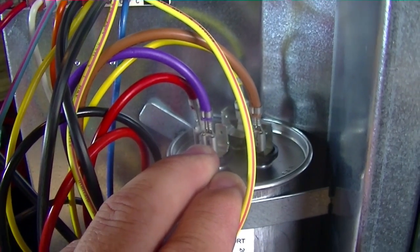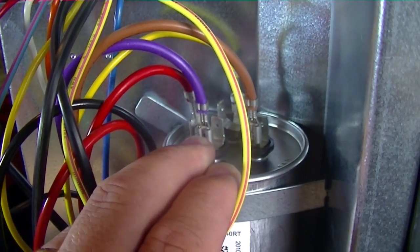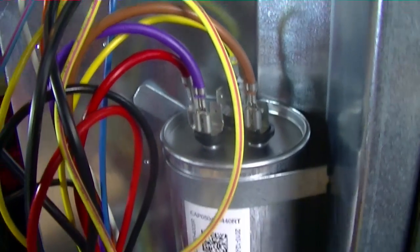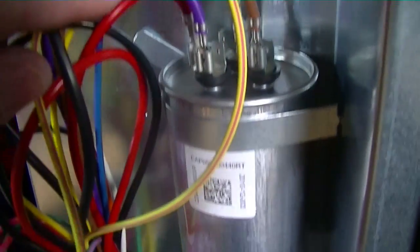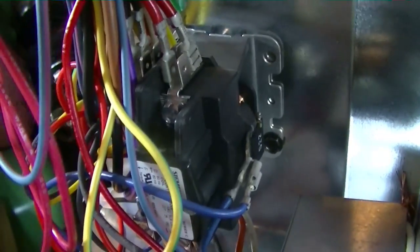The purple serves as one half of power, or L2, 120 volts, and is jumpered via this red wire down to the top of the contactor, here.